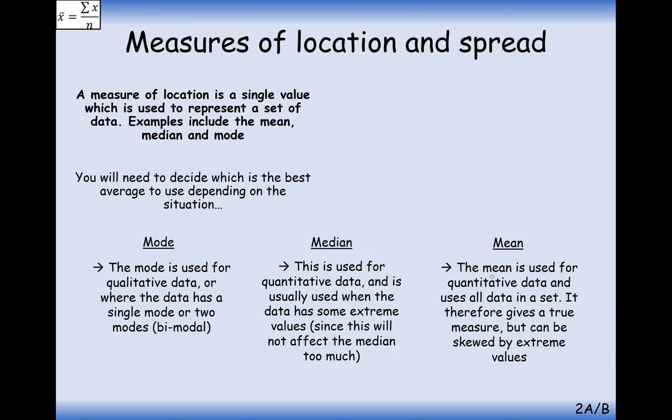The mean here is more commonly used, but not necessarily always appropriate. The mean is used for quantitative data and uses all the data sets. It therefore gives a true measure but can be skewed by extreme values. Okay, so that's really the difference between the median and the mean then. The median does not get skewed by extreme values. The mean does, but the mean does take into account all the pieces of data from the data set.